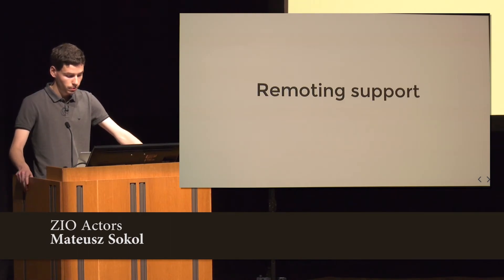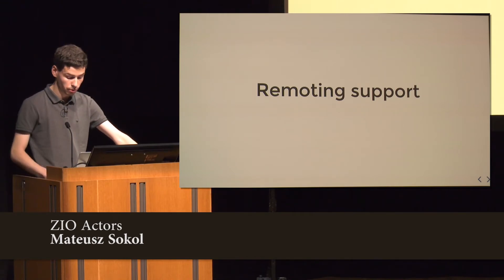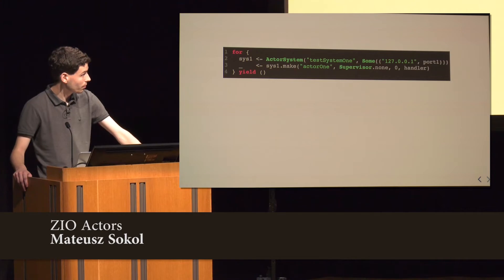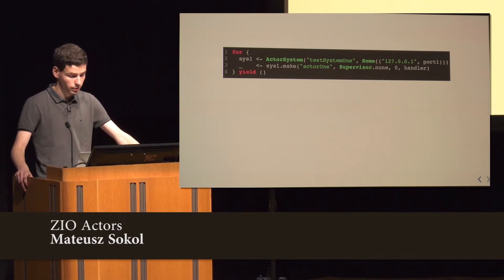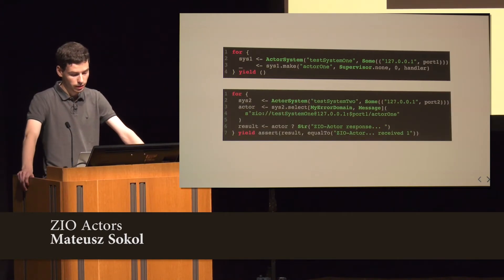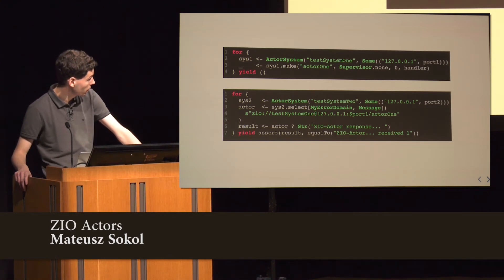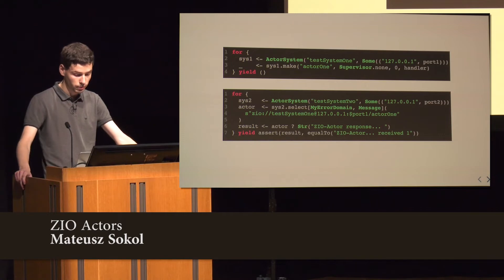Now let's move to remoting support. The remoting is all in a single module — we're planning to separate it into two modules, but right now it's all together. For remoting, the only thing we have to do is provide a custom address and port that the actor system will be bound to. So imagine we create an actor system with a remote configuration and spawn a new actor. Then on the other node, we create another actor system with a remote configuration, and with actor selection (actor lookup) we can get the actor ref to the remote actor, providing the path to that actor residing on the remote actor system. Then we can communicate with this actor as if it's local, because it's all location transparent.